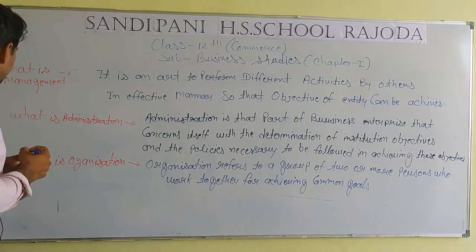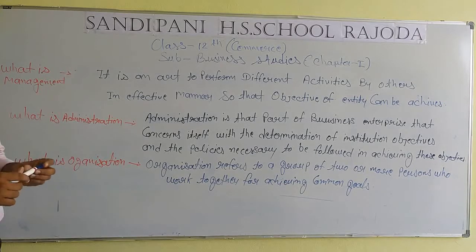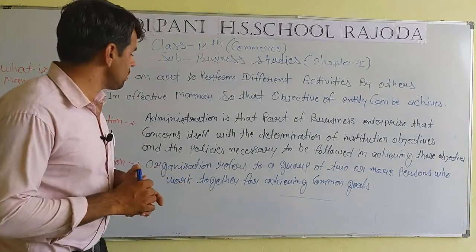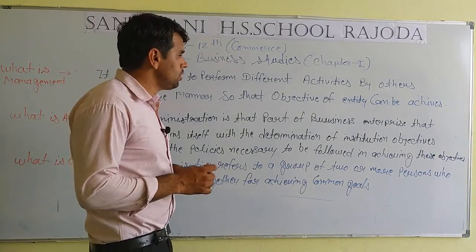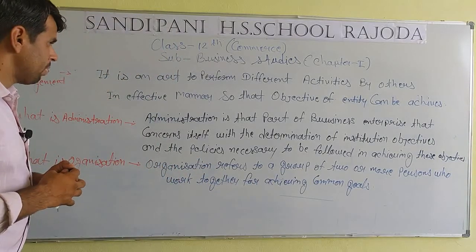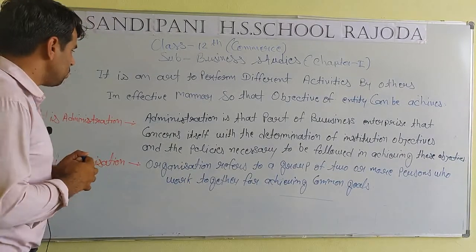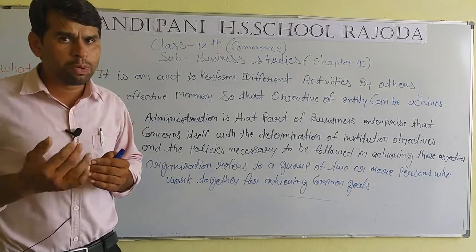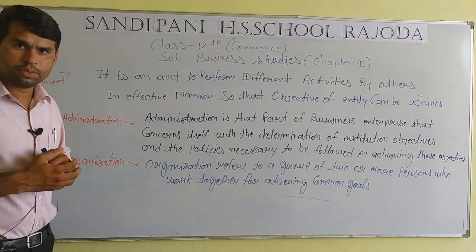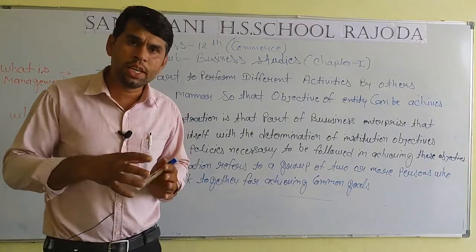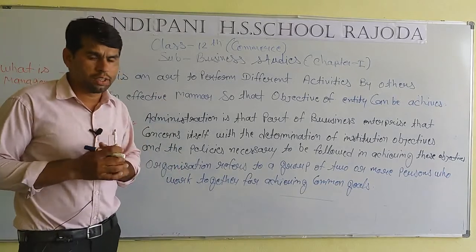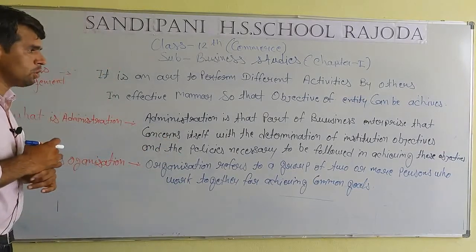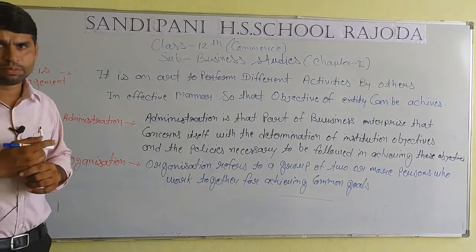The next word we are learning: what is administration? Administration means Prasasana. Administration is that part of a business enterprise that concerns itself with the determination of institutional objectives. जो प्रशासन होता है, business का वह part होता है जो पूरी दृढ़ता के साथ institute के objectives को प्राप्त करने के लिए लगा रहता है। प्रशासन के द्वारा ही किसी organization के objectives को achieve किया जाता है, plus rule and regulation का निर्माण भी administration के द्वारा ही होता है।